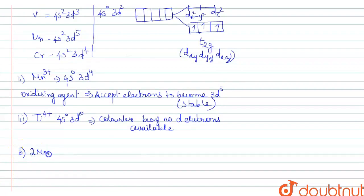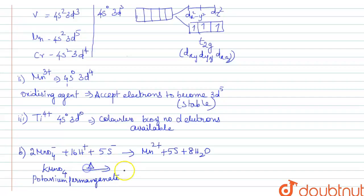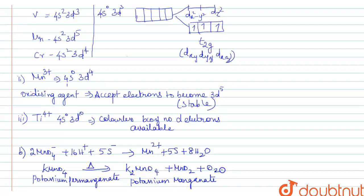For the second part, the equation is: 2MnO4⁻ + 16H⁺ + 5S²⁻ → Mn2+ + 5S + 8H2O. Here, Mn is reduced to Mn2+ and sulfur and water are the products. For the next equation, KMnO4 is potassium permanganate. When potassium permanganate is heated, the products are potassium manganate, manganese dioxide (MnO2), and oxygen.